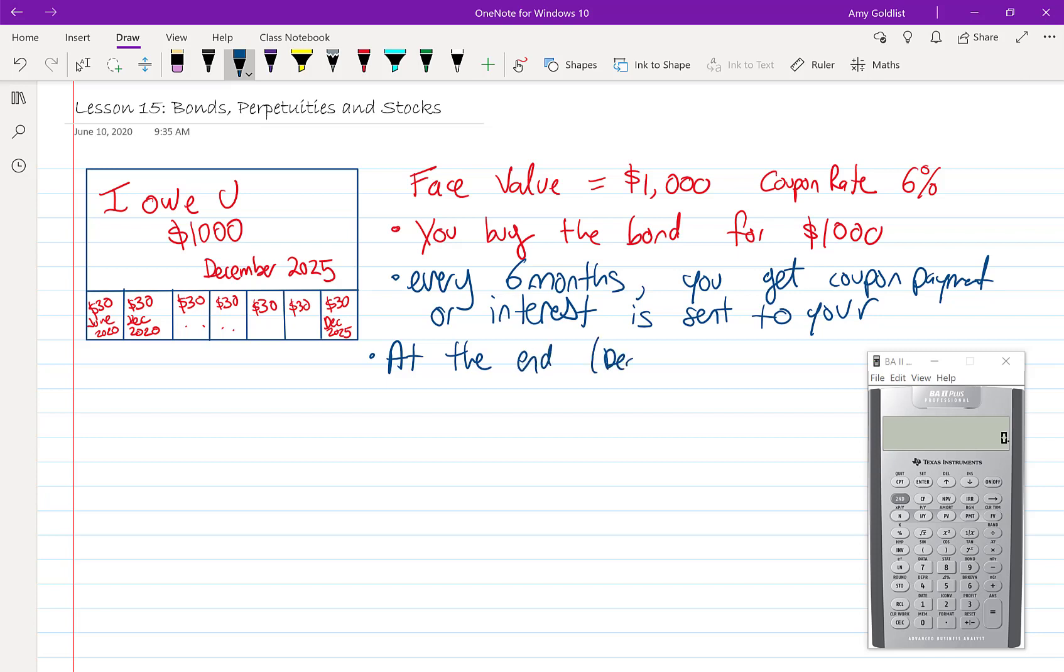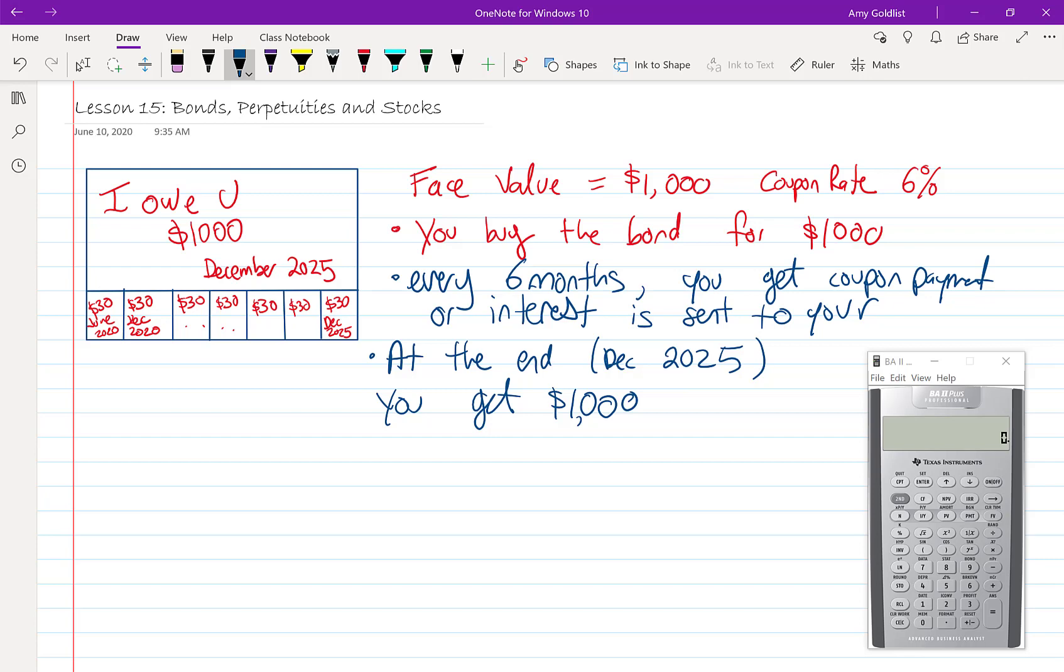At the end of the time period, here in December 2025, you get your $1,000 back. So the money, the interest, is being calculated every six months and you get that. This bond has a face value of $1,000, a coupon rate of 6% compounded semi-annually, and it has a maturity of ten years. That means that for ten years you get these payments.